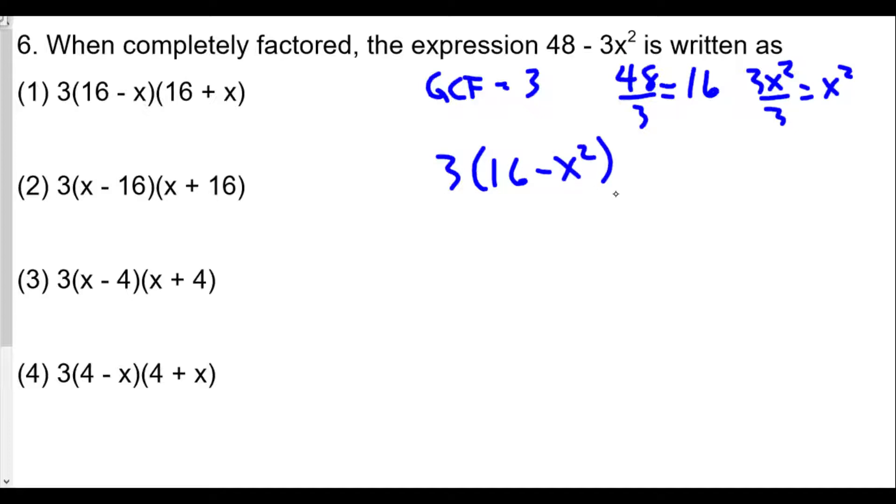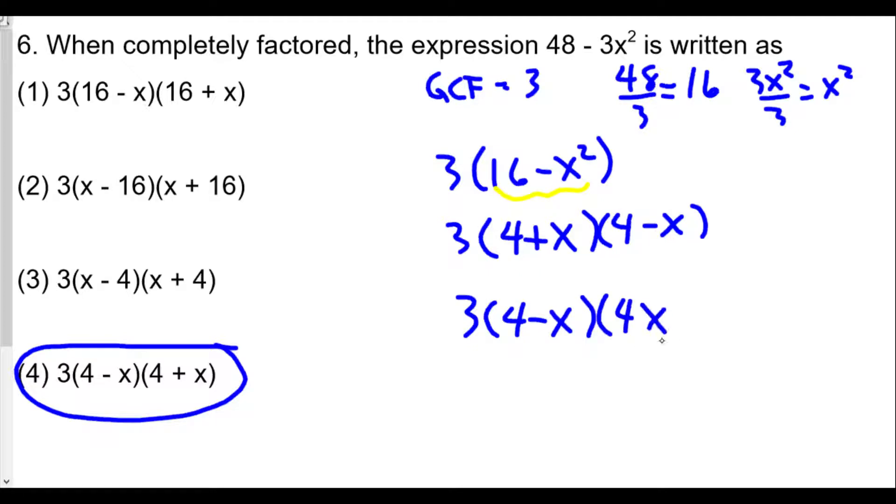Now we can factor this part again because of the conjugate pair. The square root of 16 is 4 and the square root of x² is x. So we're looking for 3 times (4 + x) times (4 - x) and the one that resembles this most is going to be choice 4. It's the same thing because multiplication is commutative, which means you multiply a times b or b times a with the same result.